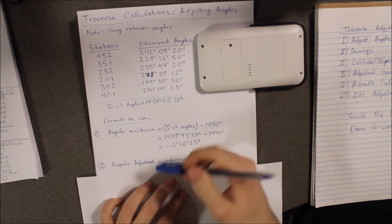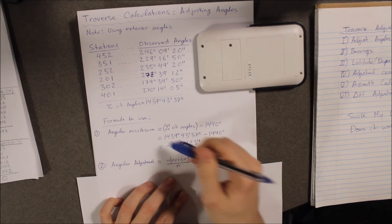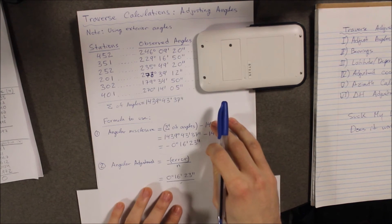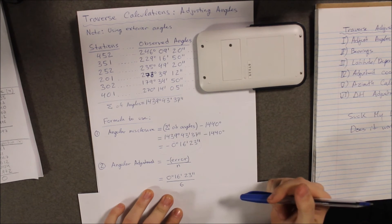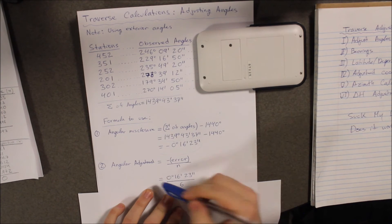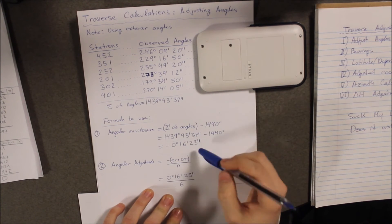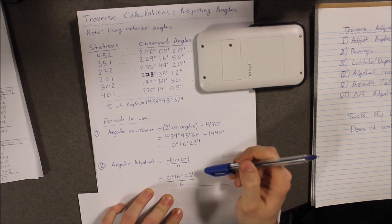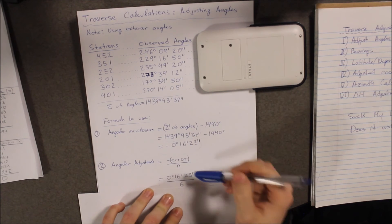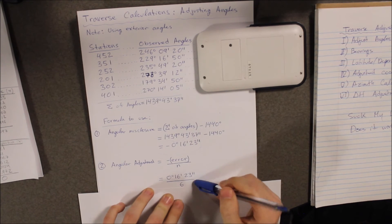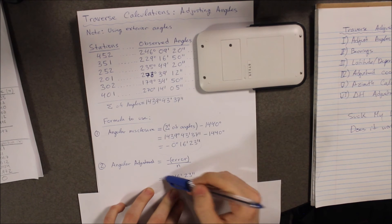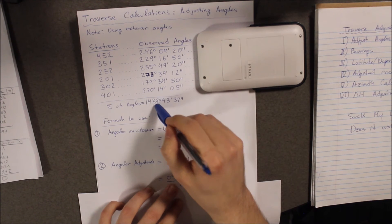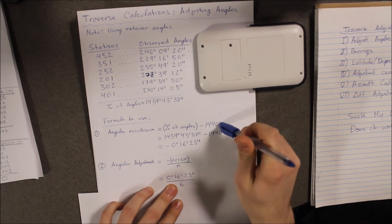Now, I'm going to insert the previous result from the angular misclosure and the number of sides we have. Once I do that, you will notice I have this. Now, one thing you may question is where did the negative sign go? Well, our previous result is negative and the formula has a negative in it already. Therefore, the negatives cancel and we are left with a positive value, which makes sense. Because when we do it, we want to add it up and make this number right here equal 1,440.